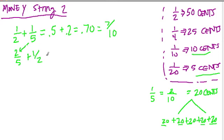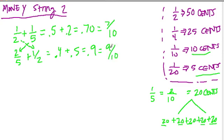What if we have two fifths plus one half? We still have a half, but now we have two fifths instead of one fifth, so this sum should be bigger by one fifth — that's twenty cents more. Two fifths is forty cents, plus a half which is fifty cents, equals 0.9 or nine tenths, which is ninety cents — twenty cents more than seventy cents.